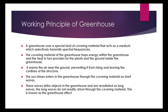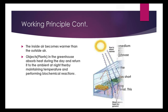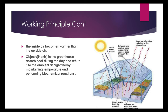The sun's light enters the greenhouse through the covering material as short waves. These waves strike objects in the greenhouse and are re-radiated as long waves. The long waves do not readily return through the covering material. This is known as the greenhouse effect, and the inside air becomes warmer than the outside air.